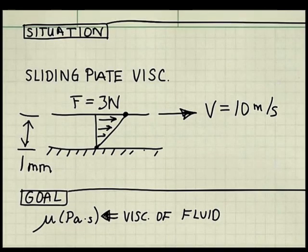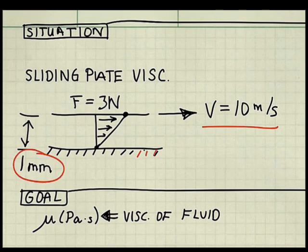In my situation diagram, I show a force of 3 newtons on the top plate, a velocity of 10 meters per second on this top plate. I show that the bottom plate is stationary, the gap is 1 millimeter, and I capture my goal. The goal is the viscosity of the fluid in this region in units of pascal seconds.